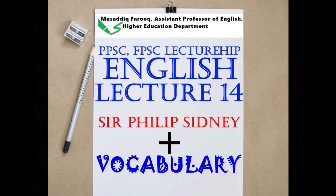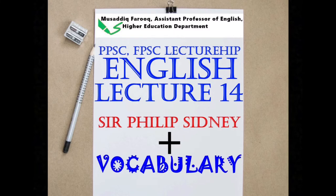As you know, we have been talking about history of English literature and linguistics along with vocabulary and grammar in our series of lectures that is meant to be very helpful for the candidates of lectureship in English. Our previous lecture, lecture 12, was about Edmund Spencer specifically, and at the end of that lecture I mentioned that my next lecture would be on Sir Philip Sidney.